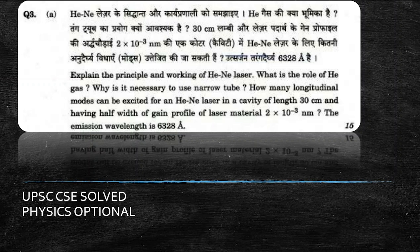Hello everyone. In today's session we will be solving one of the previous year questions of UPSC CSE Physics Optional. The question asks us to explain the principle and working of a helium-neon laser, the role of helium gas, why we use a narrow tube, and finally how many longitudinal modes can be excited given the cavity length, half-width of the gain profile, and the emission wavelength.